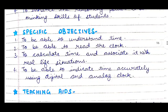Next are specific objectives. First, to be able to understand time. Second, to be able to read the clock. Third, to calculate time and associate it with real life situations. Fourth, to be able to indicate time accurately using digital and analog clocks.